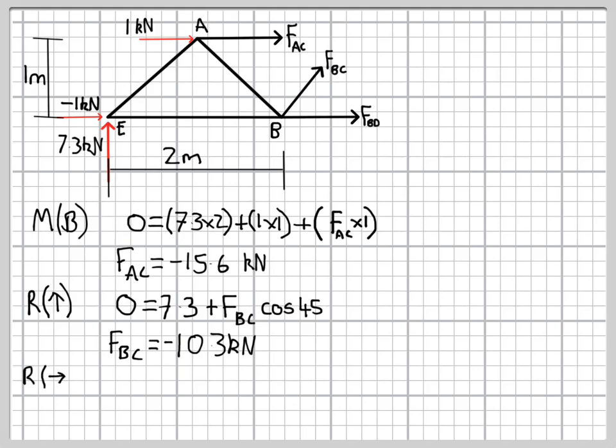And then our final equation of equilibrium is horizontal equilibrium. There's a few more terms in this one, but it's still just got one unknown, that's the FBD force, and we find that the force in BD is tensile, so a positive force of 22.9 kN.